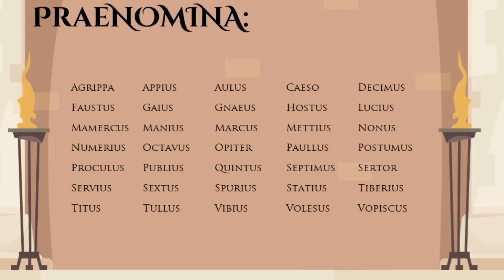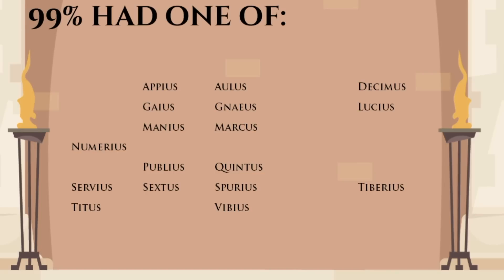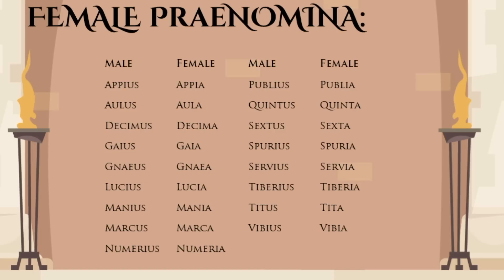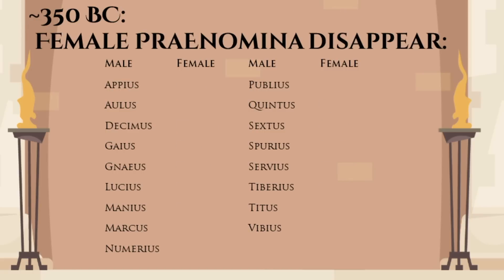While there were around a thousand different Roman nomina, the number of personal names was very limited. Varro lists around three dozen different praenomina and there are 56 unique ones known to historians. But 99% of Roman males of the Regal and Republican period shared one of only 17 of those. In the Roman kingdom and early republic, women used to have praenomina — the feminine forms of male praenomina, like Gaia and Lucia. But by 350 BC, female praenomina completely fell out of use.